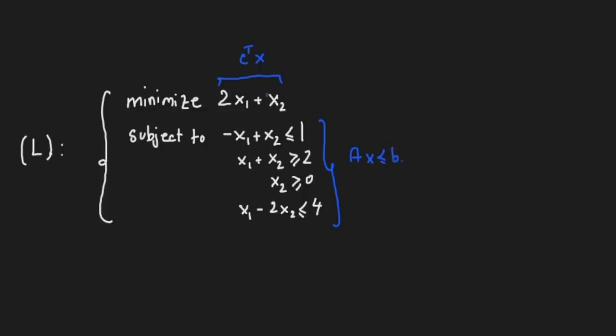The way you can do this is recognize that 2x₁ + x₂ could actually be written as c transpose x, where your x contains your variables x₁ and x₂. Your c will then contain the coefficients of each of your variables, so in our particular case it would be 2 and 1.